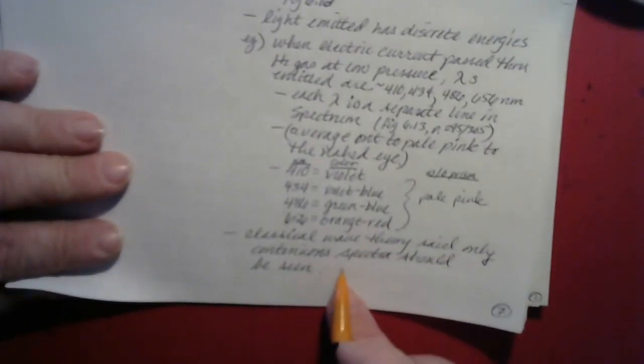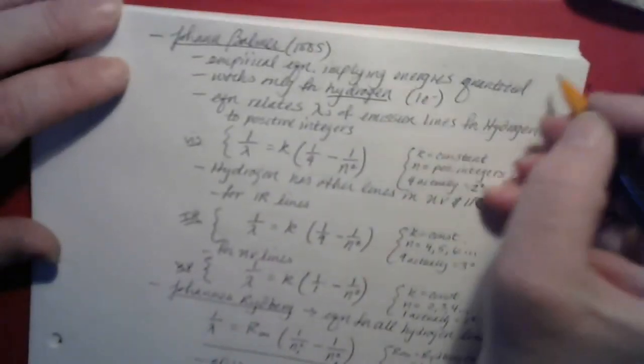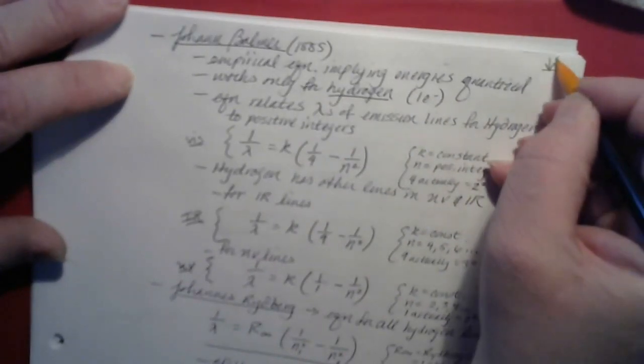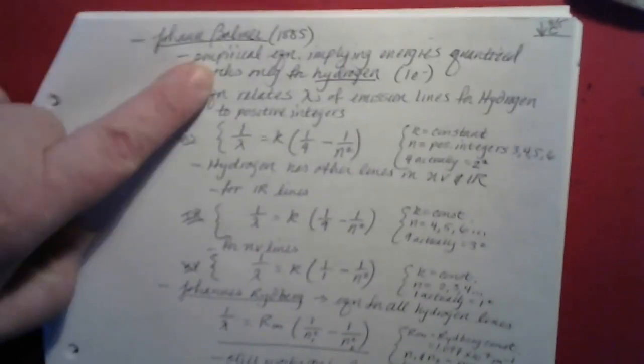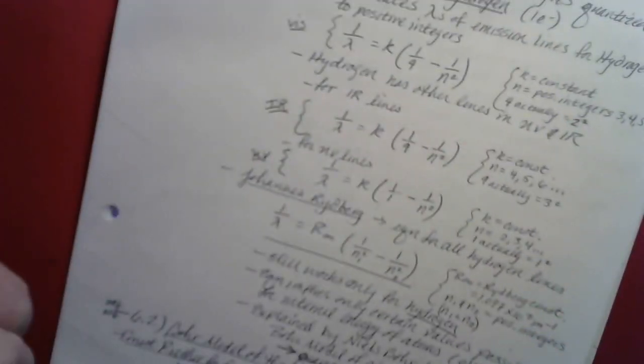Classical wave theory said that only a continuous spectrum should be seen from something like this, not a line spectrum — so again we have to revise our old theories. We'll stop here for today, just before Johann Balmer, and pick that up next time. Homework problems for chapter six will be posted very soon.